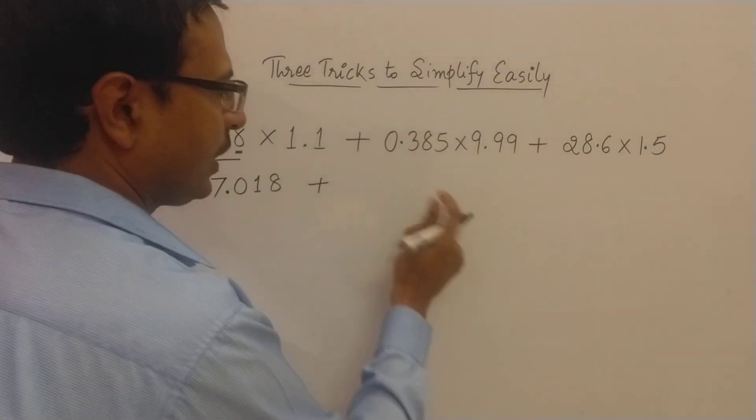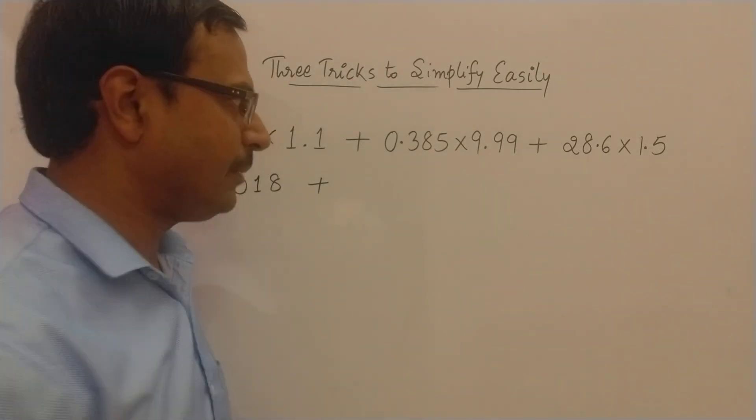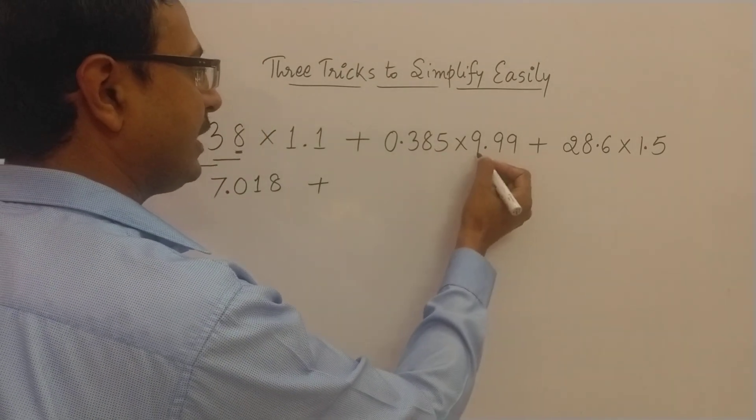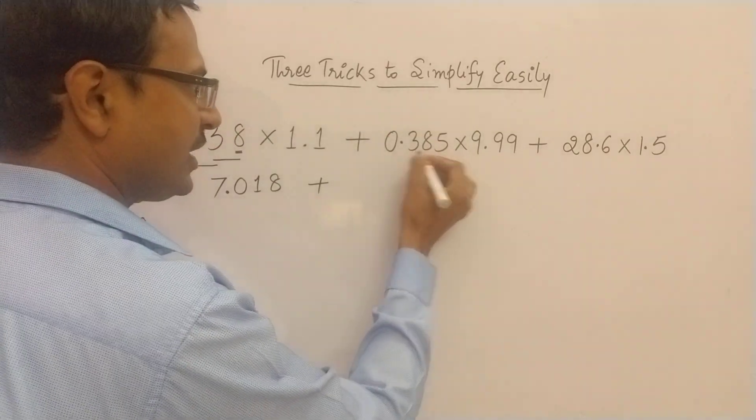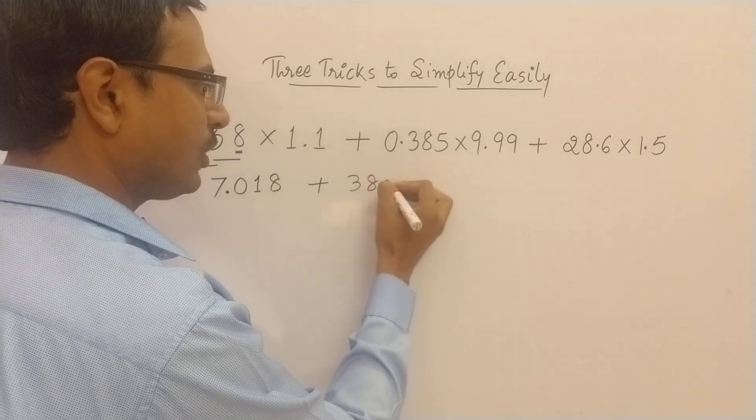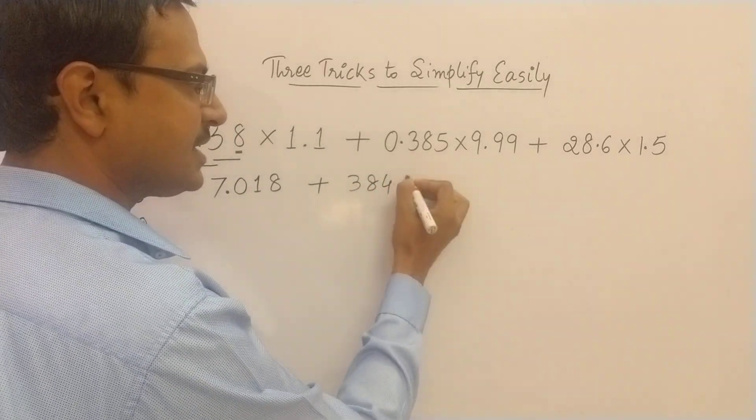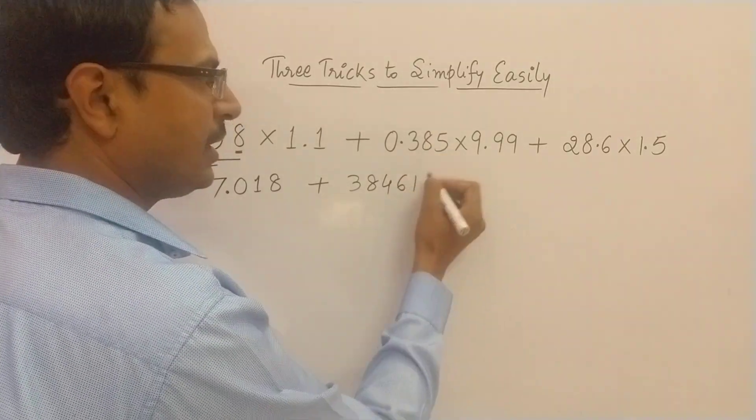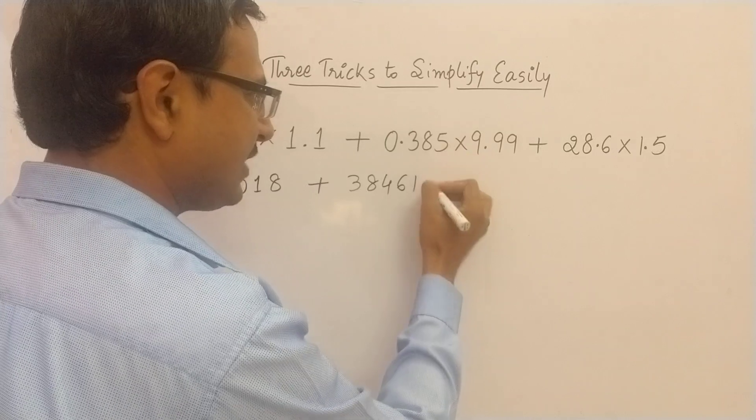Now let's see the second one. This is 385 into triple 9 if I remove the decimal. Now how do you multiply numbers by 9s? I have already posted videos on this. So 385 reduces to 384, and then subtract from 9: 9 minus 3, 6; 9 minus 8, 1; and last one to be subtracted from 10. So 10 minus 5 is 5.